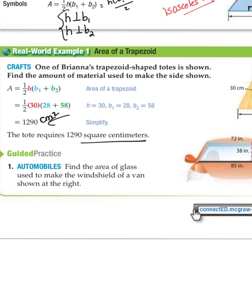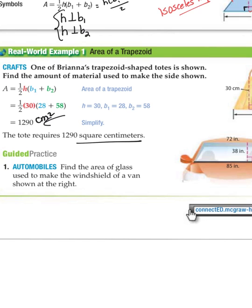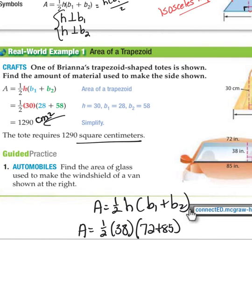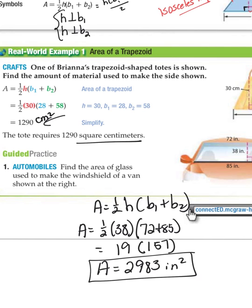Okay, let's look at what the guided practice tells us. Find the area of glass used to make the windshield of a van shown at the right. See, it's a little off-center there. Now, you can see where that height is. Once again, write your formula that the area is one-half the height times the sum of the bases. So, the area is one-half the 38 times 72 plus 85. And even though you can use your calculator to do some of this arithmetic, and I might add it's easy arithmetic, you need to show work so that if you miss something, I can give you credit for what you had down there that was correct. And this is in square inches.